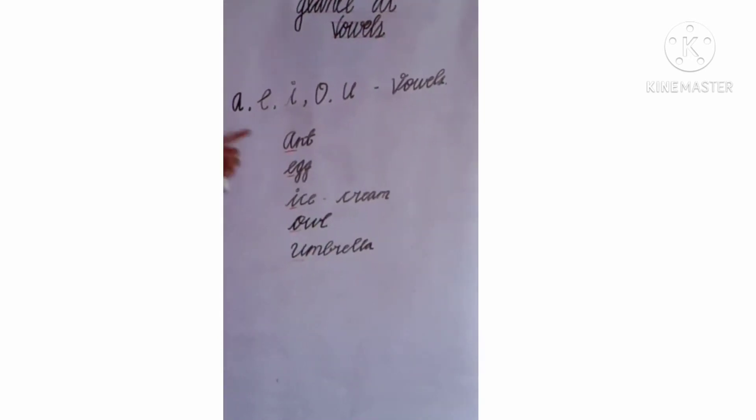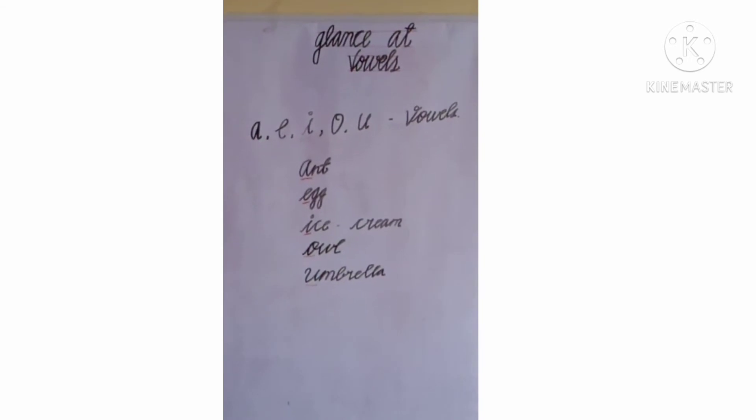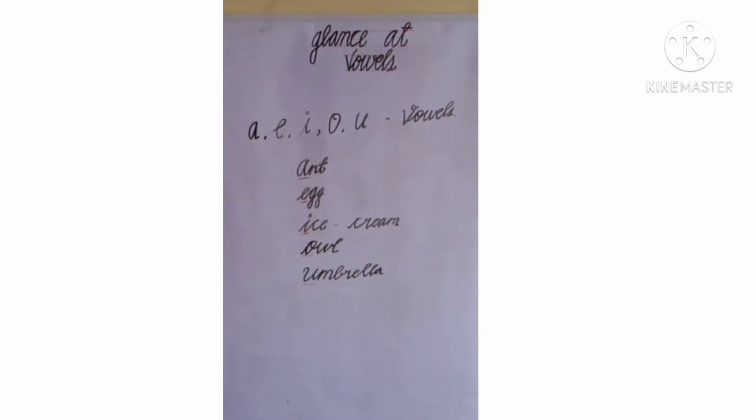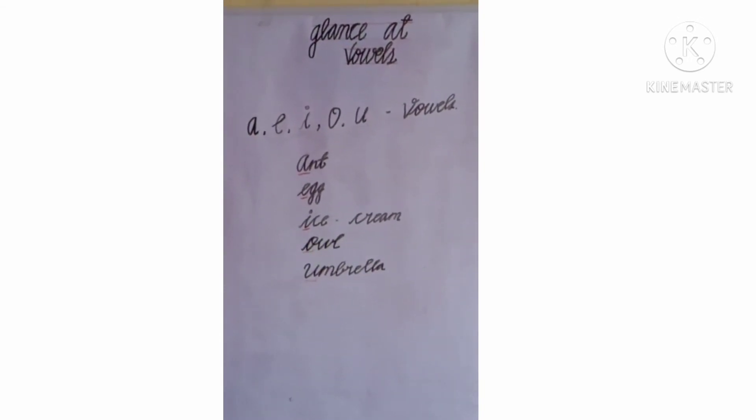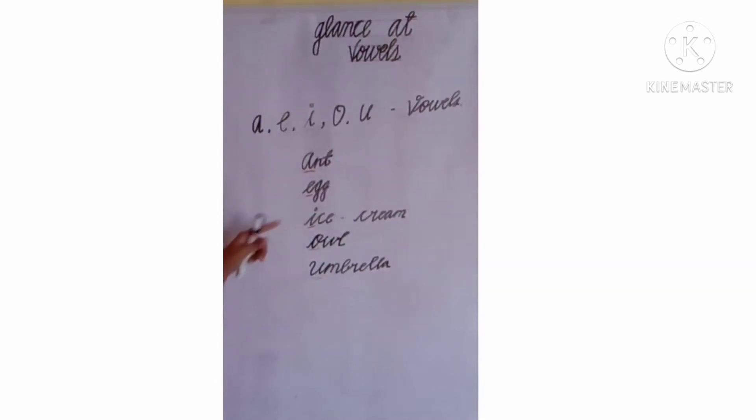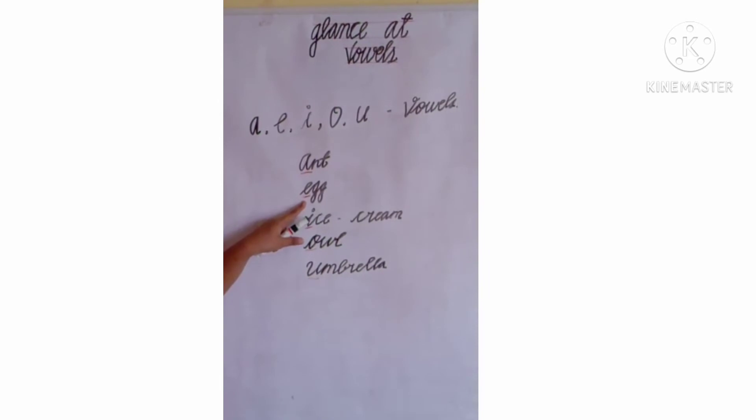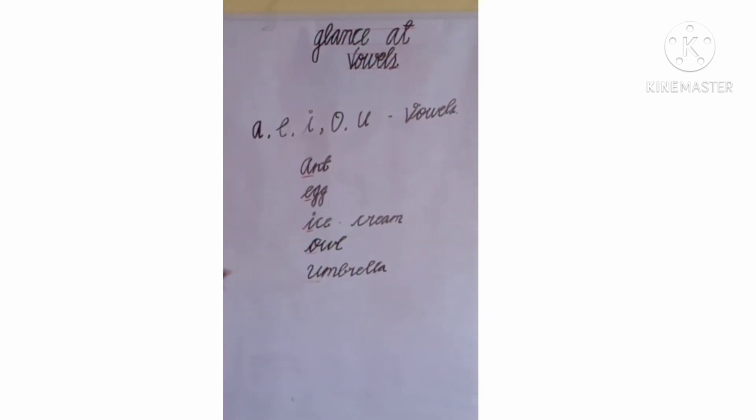Now we have underlined all the first letters. Now we will check, out of the first letter, is there any vowels? In Ant, we don't have any vowels except A. In Egg, we have only one vowel. And in Ice Cream, we have more. Let's find it.